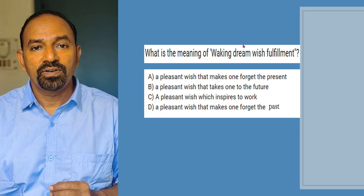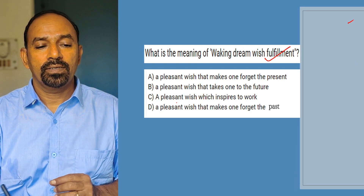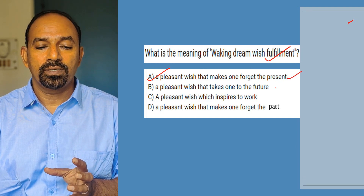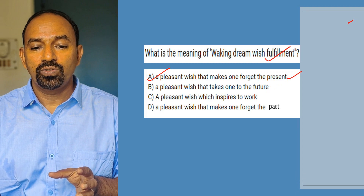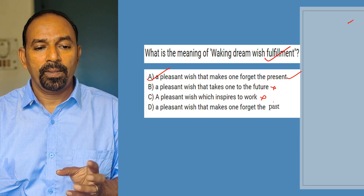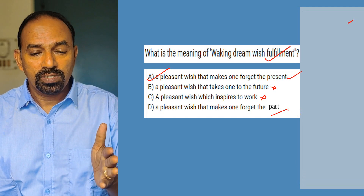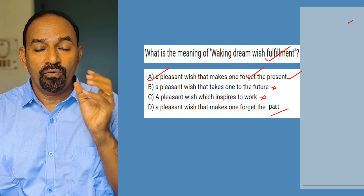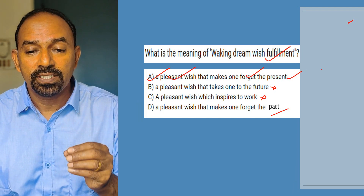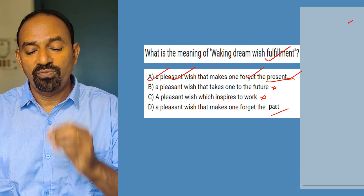First question: What is the meaning of Waking Dream Wish Fulfillment? Options: a pleasant wish that makes one forget the present; a pleasant wish that takes one to the future; a pleasant wish which inspires to work; a pleasant wish that makes one forget the past. Waking Dream Wish Fulfillment means a pleasant wish that makes one forget the present worries.